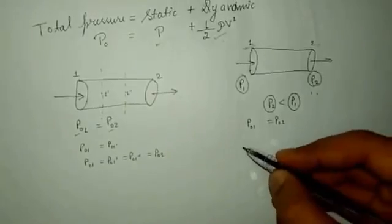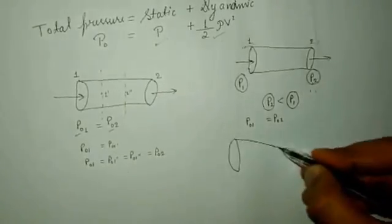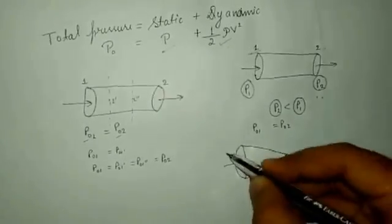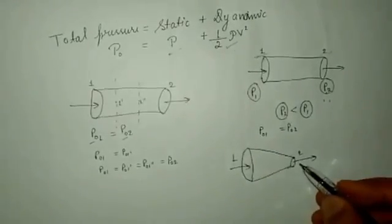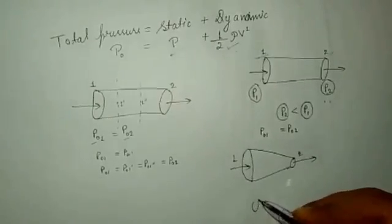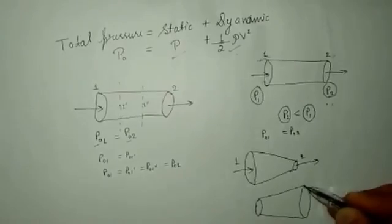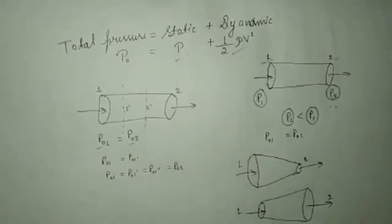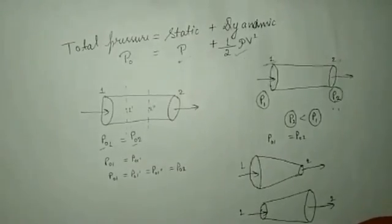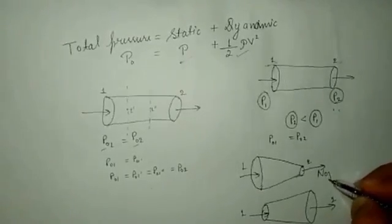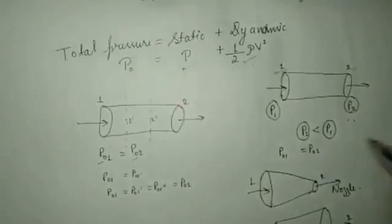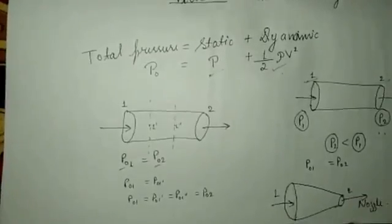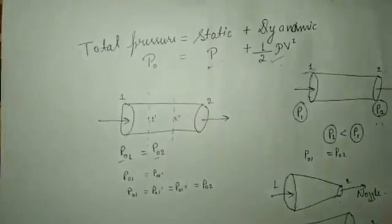Now I am going to introduce two examples. First is a nozzle — the function of a nozzle is to accelerate the flow. Points 1 and 2 are inlet and outlet of the nozzle. The second is a diffuser — the function of a diffuser is to decelerate the flow.